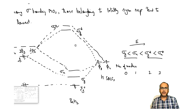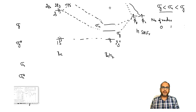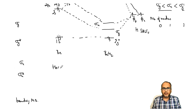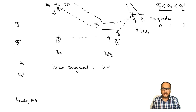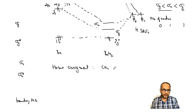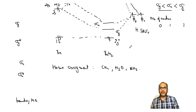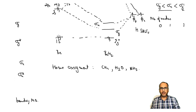There should be no confusion now. We will see more examples if time permits; otherwise, a home assignment is to develop the MO diagram for CH4 — we have already done the valence bond treatment, so it should not be a problem. Also try H2 and NH3. We can discuss any difficulties. That is all for today, thank you.